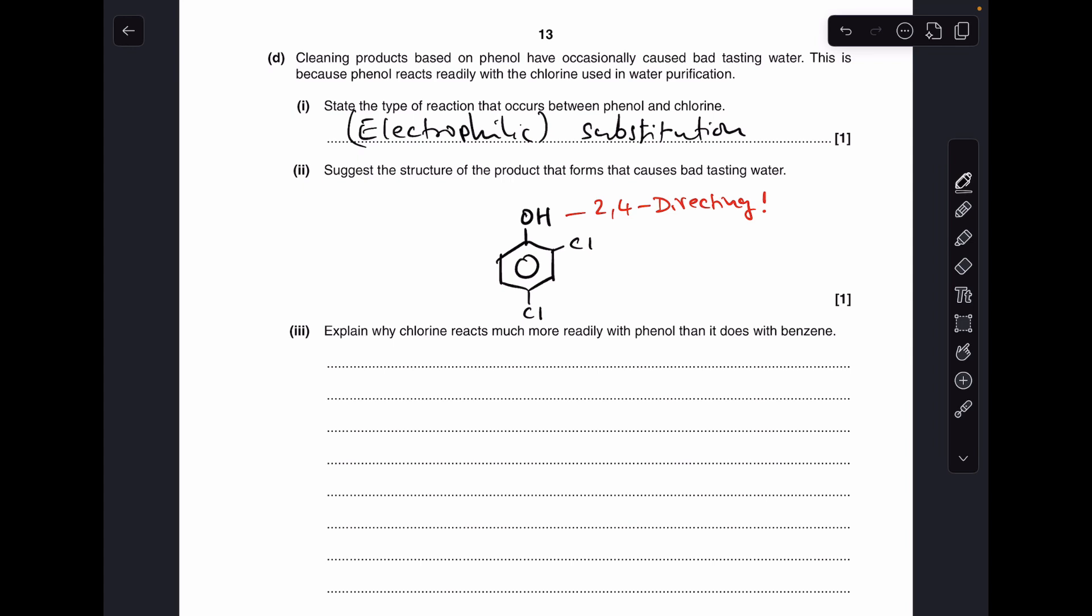Now if there's enough chlorine, you could get the di-substituted product, so that would be fine as well to say. And if there was even more chlorine present, you could get the tri-substituted product. So any of those options would have been fine.